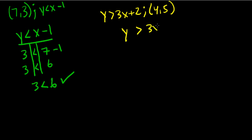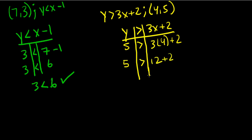So if we do this, y would become 5. So 5 is greater than 3 times 4 plus 2. We can simplify the right side. 5 is greater than 3 times 4 is 12 plus 2. If we simplify the right side, we get 14. We can see that 5 is not greater than 14, so this is not a solution.